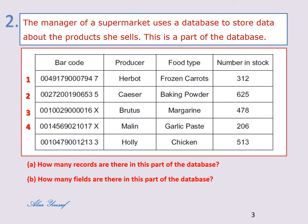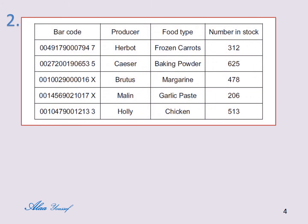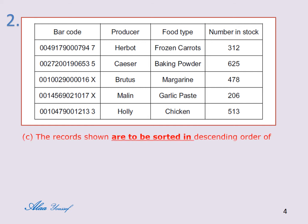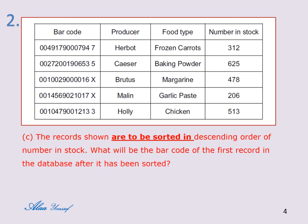The answer to A is 5 records. The answer to B is 4 fields. C) The records shown are to be stored in descending order of number in stock. What will be the barcode of the first record after it has been sorted?